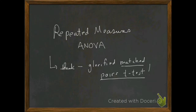This video is on repeated measures ANOVA, and I think one of the most effective ways to think about repeated measures ANOVA is to bounce it off a statistical technique that we've already looked at in this class, called the matched pairs t-test. Let's think about a situation where we have a matched pairs t-test.